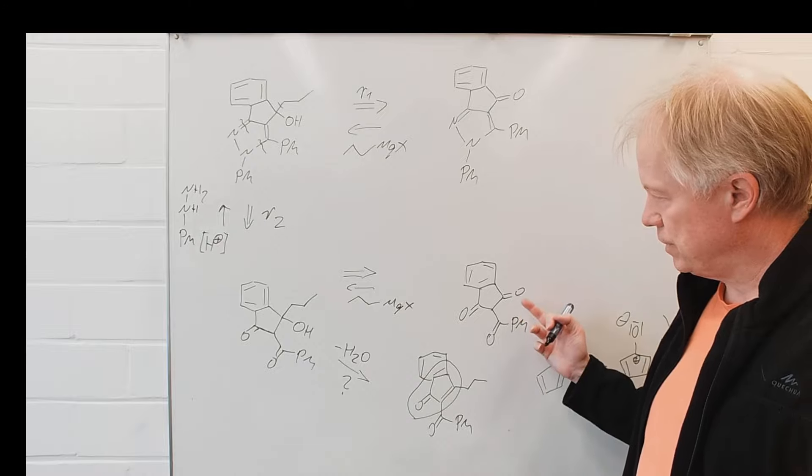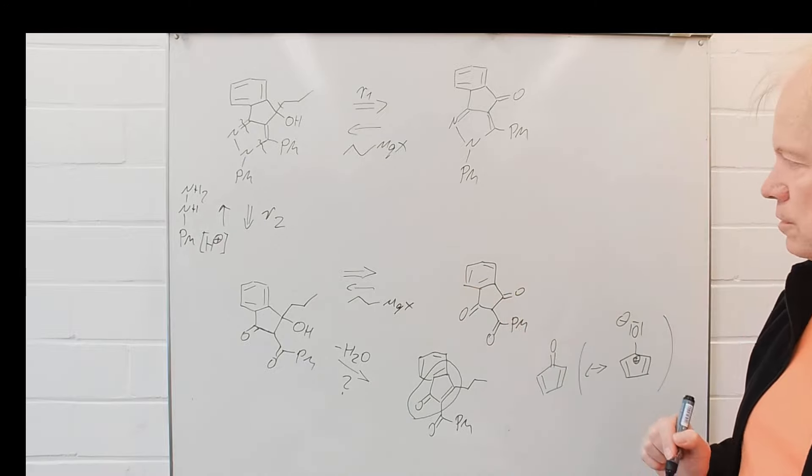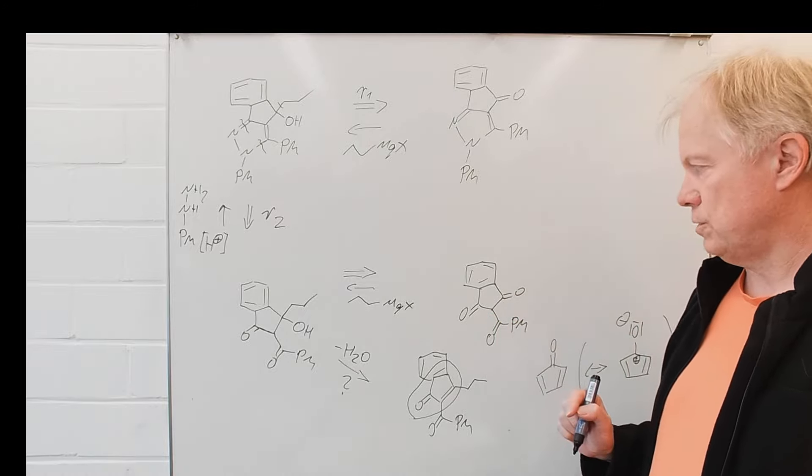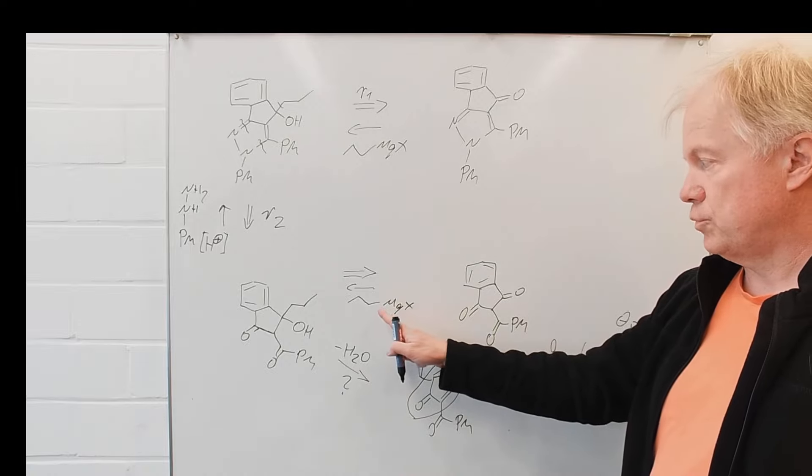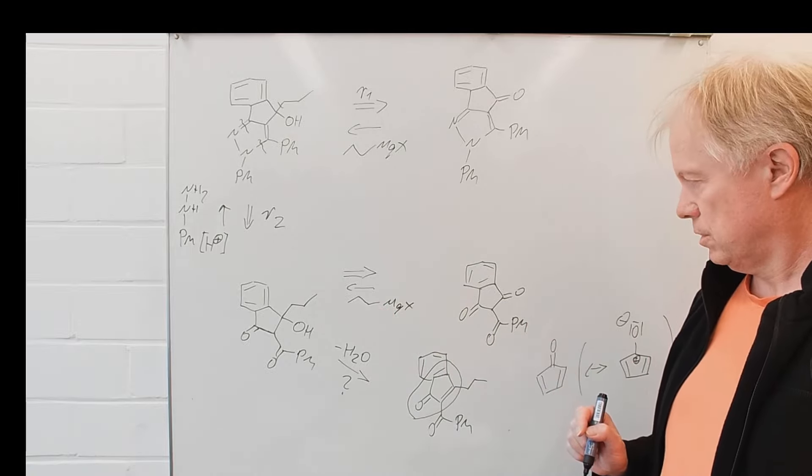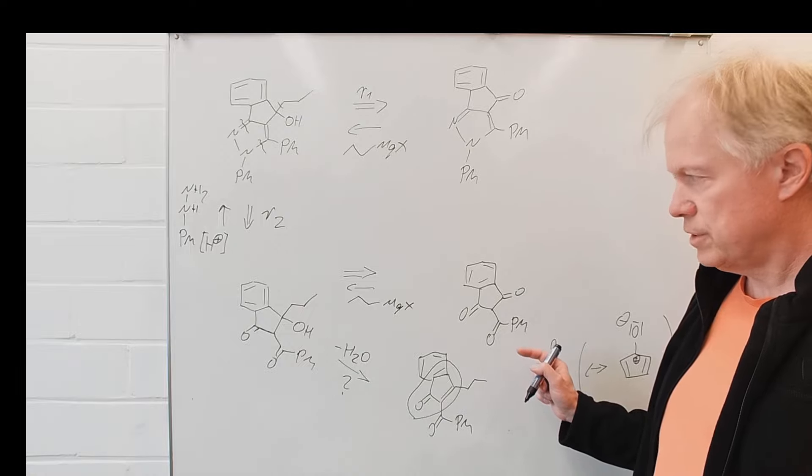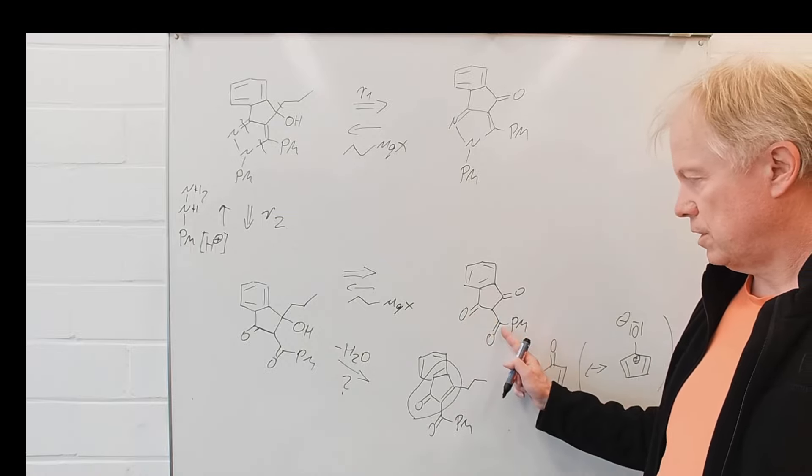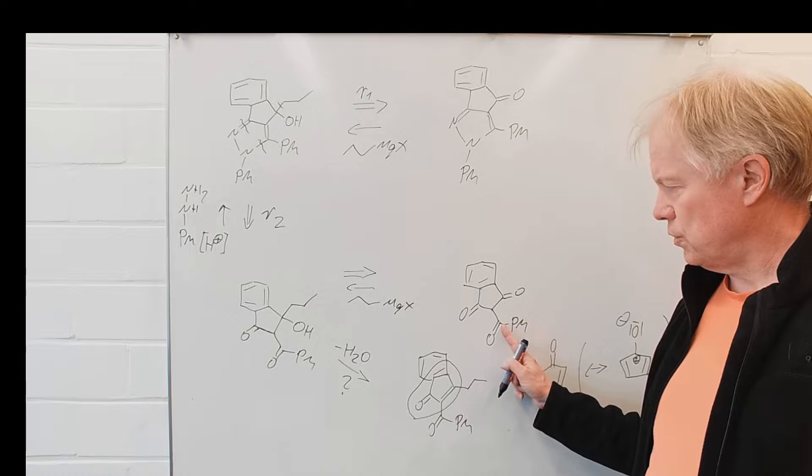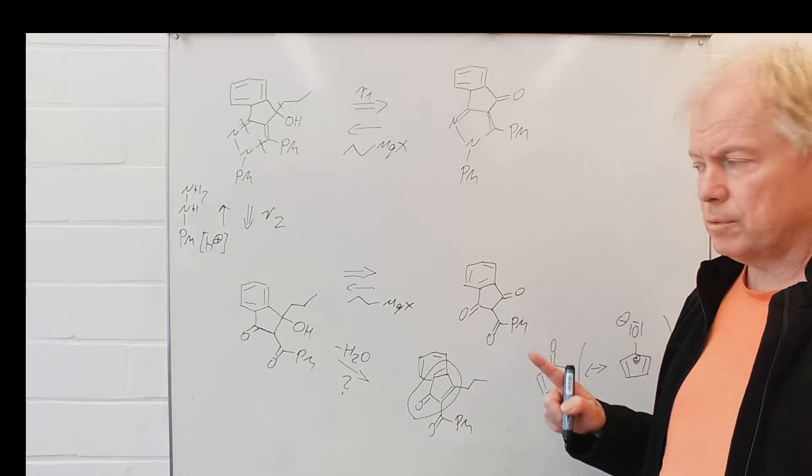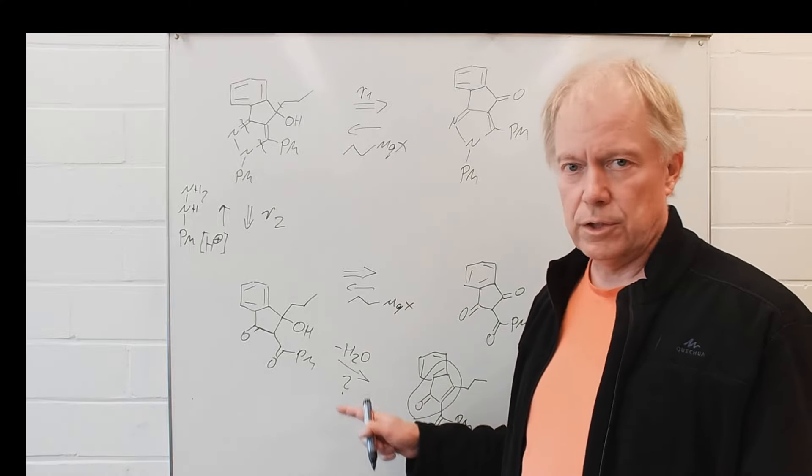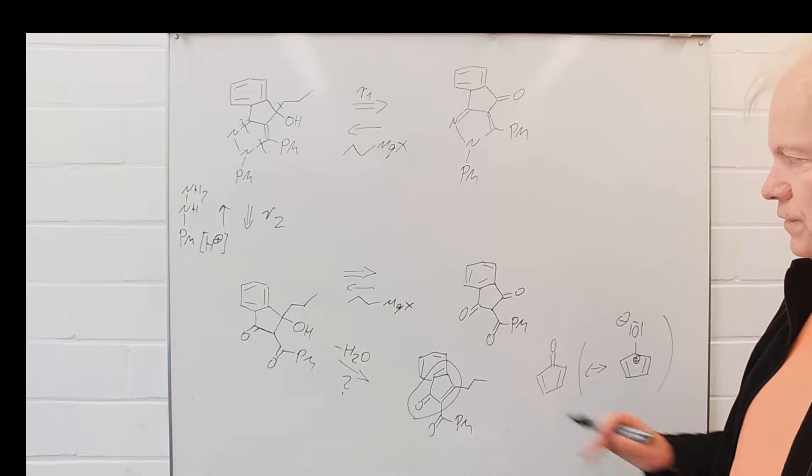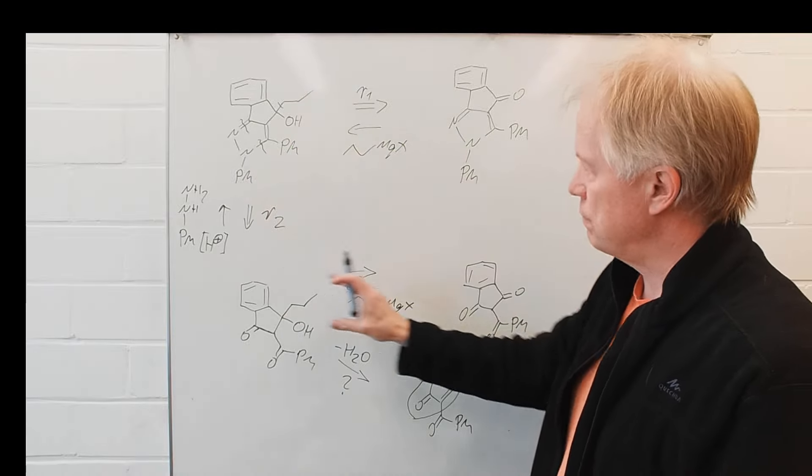If the three ketones would be the starting material, and here we already see, we have a selectivity problem. So if the propyl Grignard reacts with that compound, why should it react preferentially with this or that symmetrical ketone functionality and not with that one? So it's a selectivity problem, which then would diminish the yield we could achieve. So this is certainly the disadvantage of this pathway.